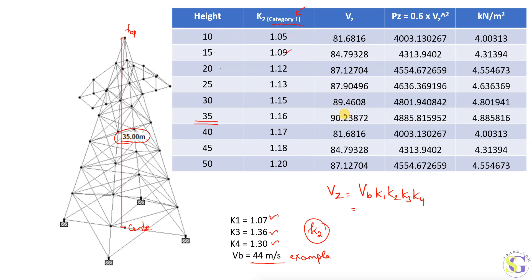Now Vz is converted into pressure. The pressure formula is Pz = 0.6 × Vz². Substituting the values gives results in Newtons per meter square. Converting to kN per meter square by dividing by 1000, we get: 4.0, 4.31, 4.55, 4.6, 4.8, and 4.8 kN/m² at the respective heights. These are the pressure values we will use.